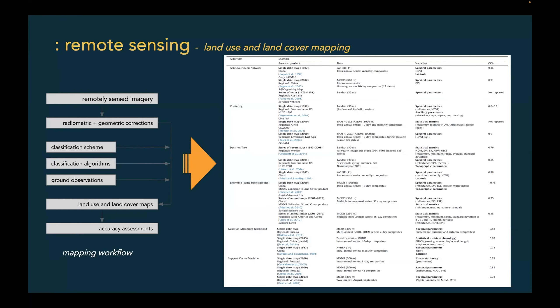In classification schemes, there are standardized options available, and some can be customized based on needs. In classification algorithms, there is a long list to pick from based on needs. For ground observations, until recently we relied exclusively on in-situ observation — going into the field with a GPS to identify land use and land cover types. But now we can also use high-resolution satellite imagery to compensate to some extent. Once we have all of these, we plug them together to create land use land cover maps, and then perform accuracy assessment. Products with accuracy above 85% are considered useful for further analysis.